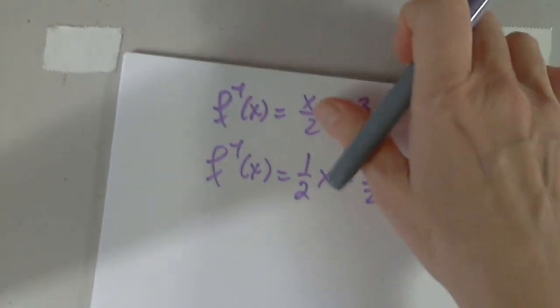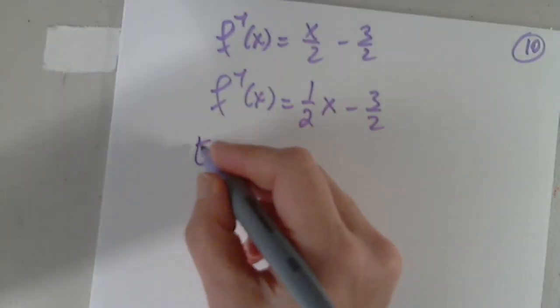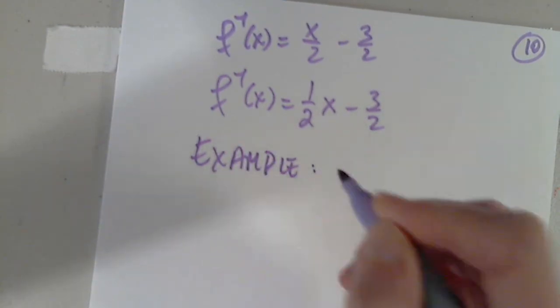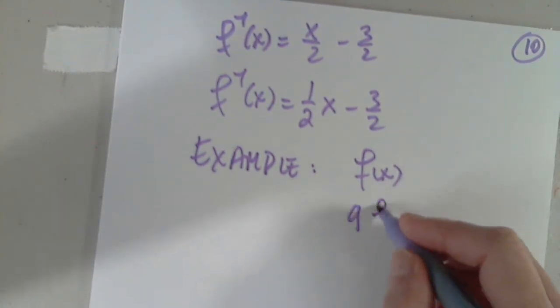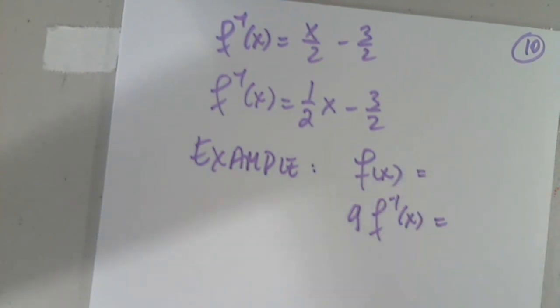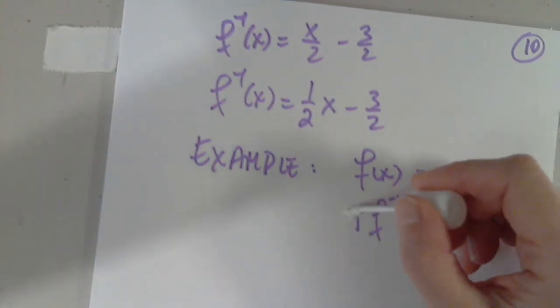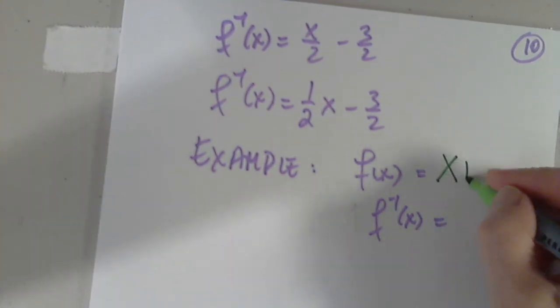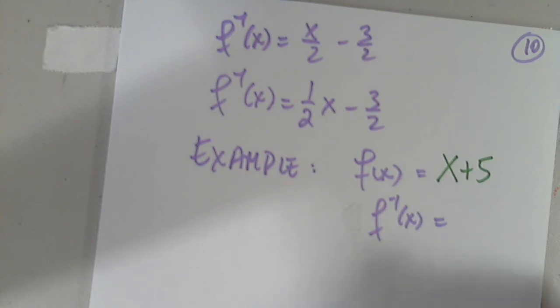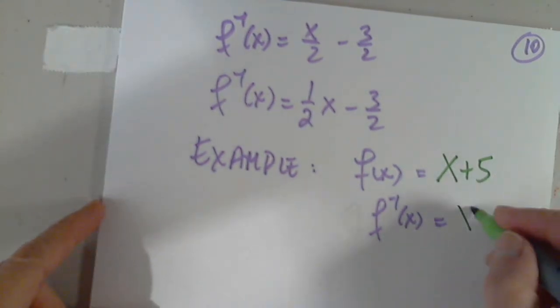Now, can you give me an example of two inverse functions? Simple ones. f of x and f inverse. So if you want to give me two functions that you know, one will undo the other. I will give you an example, and you'll give me another. So here is x plus 5. To whatever I have, I'm adding 5. To undo that, I have x minus 5.